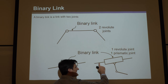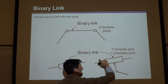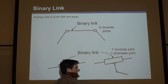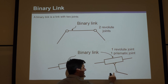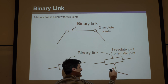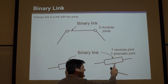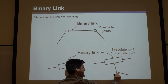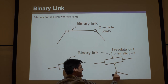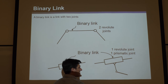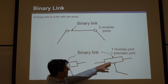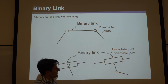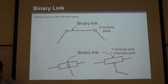Another binary link example: a box on a line where instead of drawing the box all the way down to the revolute joint, they just draw a small piece down — but imagine it's all totally rigid. The revolute joint connects to another link below. This link still has two joints: the sliding prism joint and the rotational revolute joint, so it's a binary link.